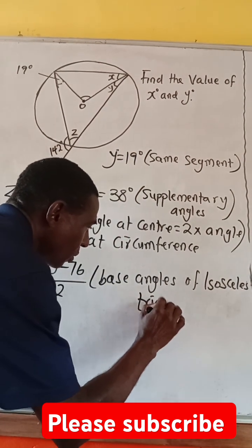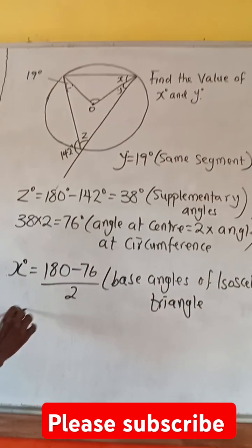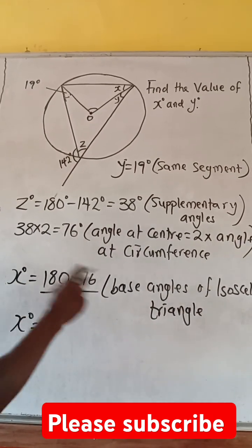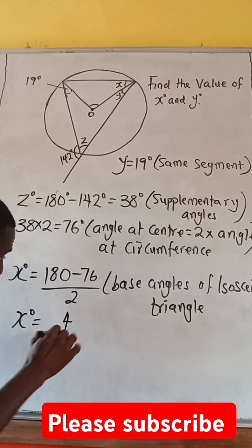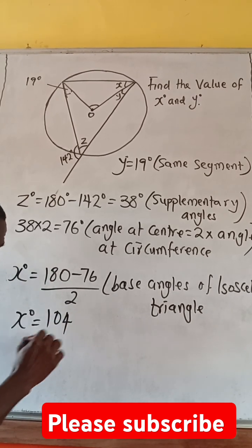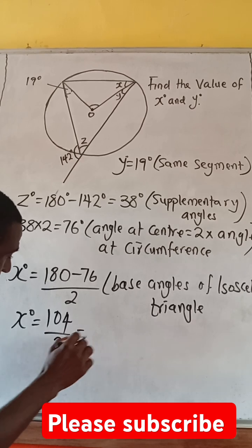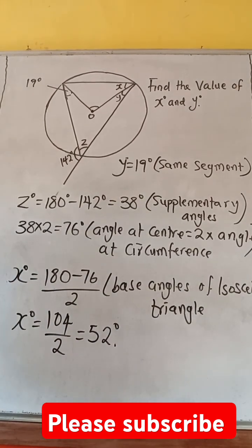So, it means this triangle. So, if we subtract that, x equals 180 minus 76, that will give us 104. So, we have 104 divided by 2. That will give us 52 as the value of x.